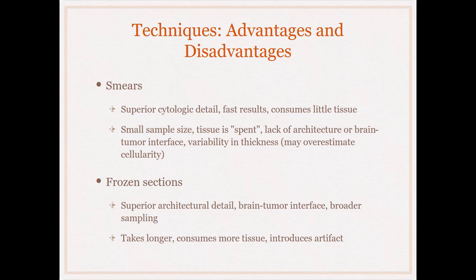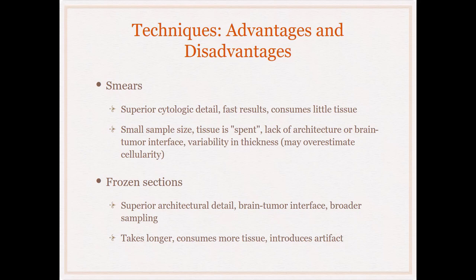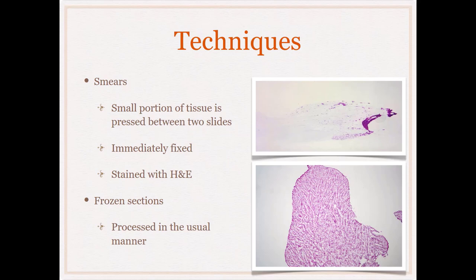Additional disadvantages of smears include lack of architecture or sense of the interface with brain tissue, and variability in thickness — if you smear too much tissue, it may overestimate cellularity. Frozen sections have superior architectural detail in contrast to the cytologic detail of smears. You also get a good sense of the brain-tumor interface and a broader sample. The disadvantage is that frozen sections take longer, consume more tissue, and introduce artifact.